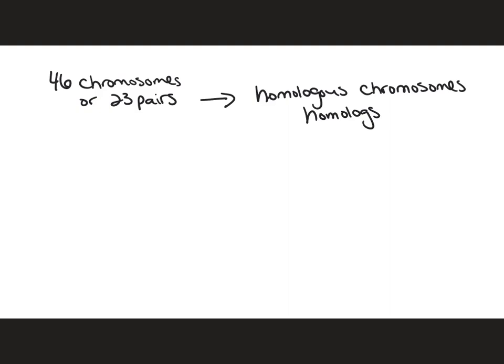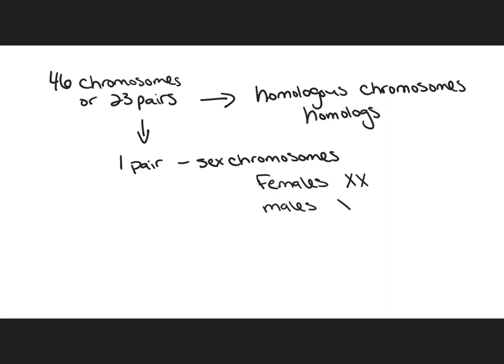Chromosomes in a homologous pair are the same length and shape, and carry genes controlling the same inherited characteristics. One pair of these 23 pairs are referred to as sex chromosomes. Females carry a homologous pair of X chromosomes — so a female would be XX — and males carry one X and one Y.